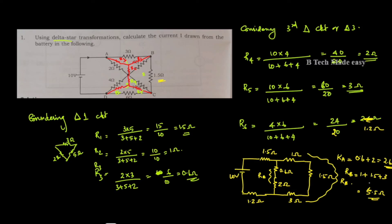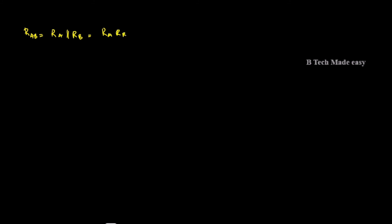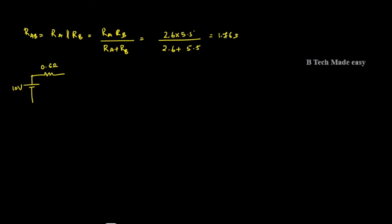Now let's calculate R_A parallel R_B. R_A parallel R_B equals R_A times R_B divided by R_A plus R_B, which is 2.6 into 5.5 divided by 2.6 plus 5.5. This equals 1.76 ohms.